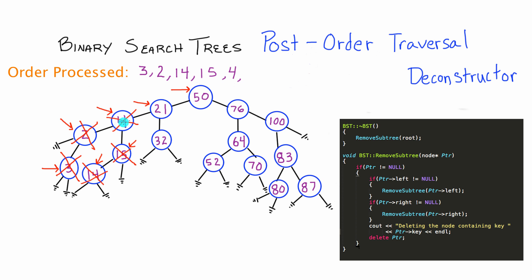Node 21 has already checked left, so now it checks right by calling remove subtree with a pointer to node 32. Node 32 checks left, checks right, finds no children, and its memory is deallocated. We fall back to node 21, which has now checked left and right, so we deallocate node 21's memory. Now we're back to the root, node 50.